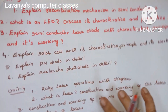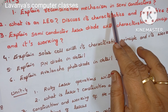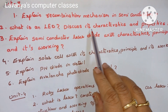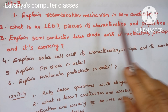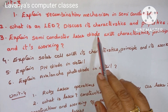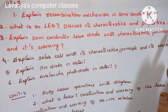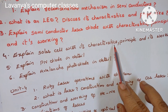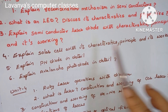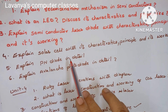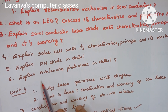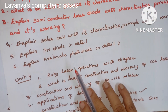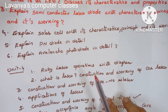Unit 3 questions: Explain recombination mechanisms in semiconductors. What is an LED? Discuss its characteristics and properties. Explain semiconductor laser diode with characteristics, principle, and working. Explain solar cell with its characteristics, principle, and working. Explain PIN diode in detail. Explain Avalanche photodiode in detail. Unit 3 has fewer questions — read all the questions carefully.